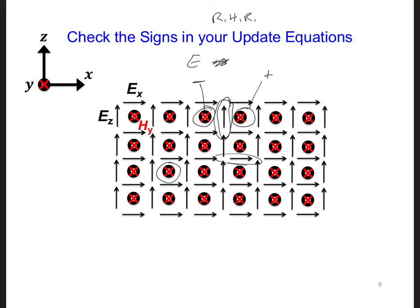if we point our thumb of our right hand in the direction of the magnetic field we are updating, say this HY right here, then we want to sum the E fields circling around this HY in the opposite direction of our fingers. So this one is in the opposite direction, and this one we sum in the same direction as our fingers.